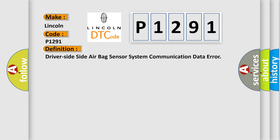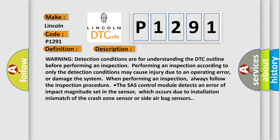And now this is a short description of this DTC code. Warning detection conditions are for understanding the DTC outline before performing an inspection. Performing an inspection according to only the detection conditions may cause injury due to an operating error, or damage the system. Always follow the inspection procedure.